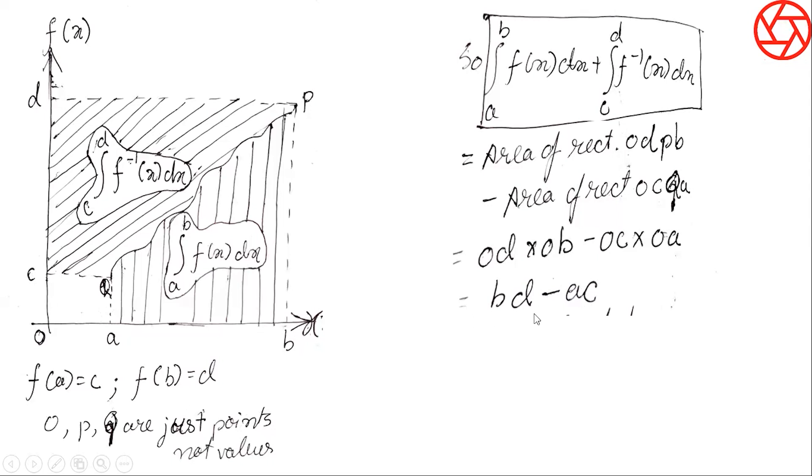So B D minus A C. B D is the area of the larger rectangle, that is B into D, and A C is the area of the smaller rectangle, that is A into C. But what can we notice from here? B is the upper limit of the first function and D is the upper limit of the second function. Similarly, A is the lower limit of the first function and C is the lower limit of the second function. Can you notice one important thing? It is just the difference between the product of the upper limits and lower limits. That is, the product of upper limits minus the product of lower limits.